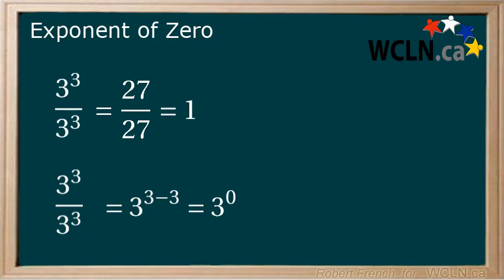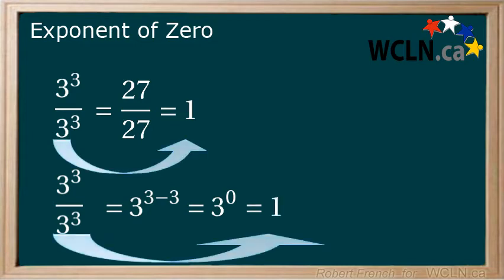and since we showed above that 3 to the power of 3 over 3 to the power of 3 equals 1, this must too, which means 3 to the power of 0 equals 1.